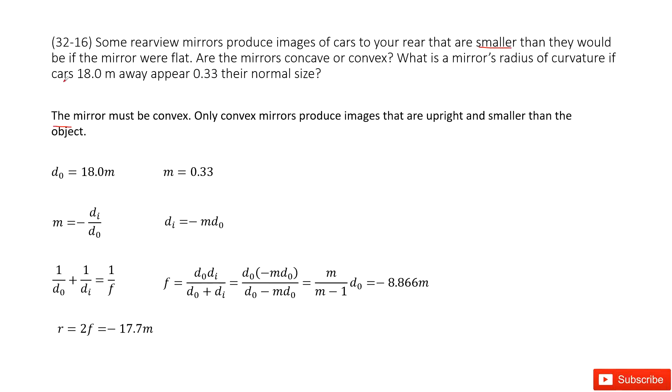So now we have two quantities. One is the object distance, which we write as d₀ equals 18 meters. Another one is the magnification, 0.33.